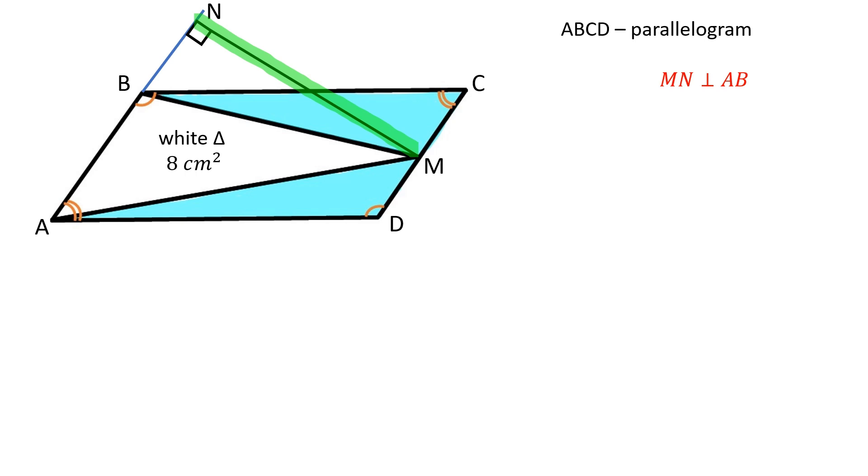Let's draw the height from the point M to AB. The area of a triangle is equal to half the product of its base and height.